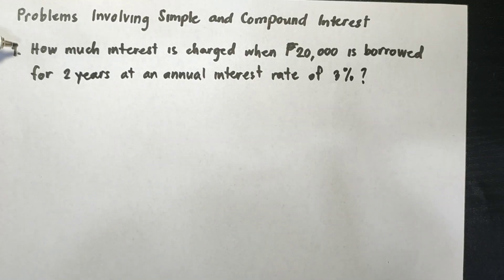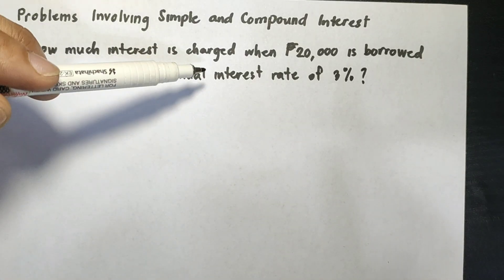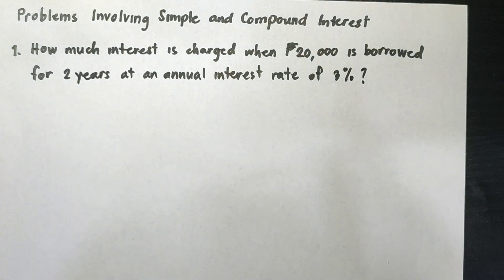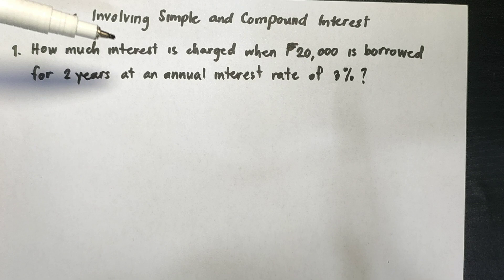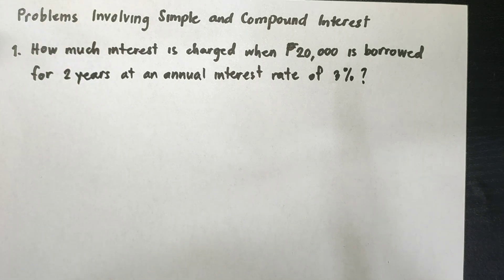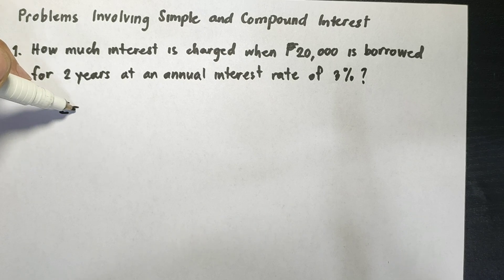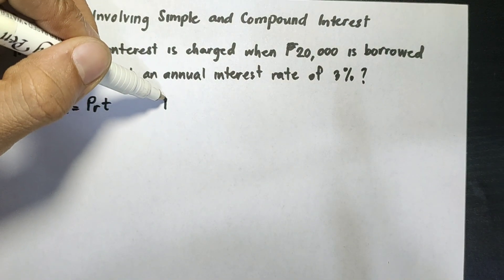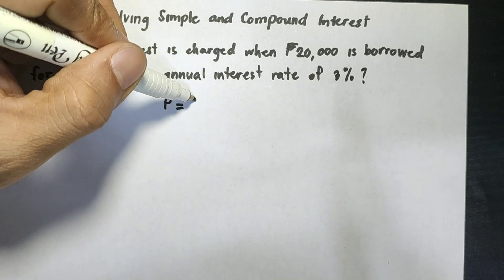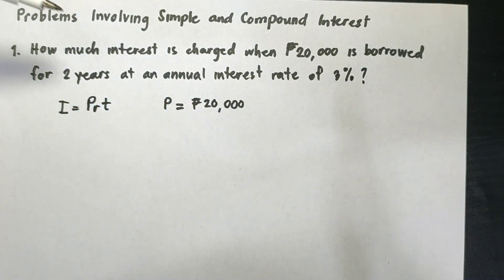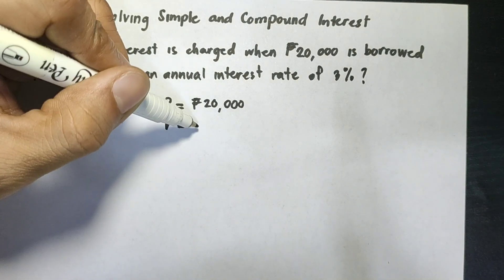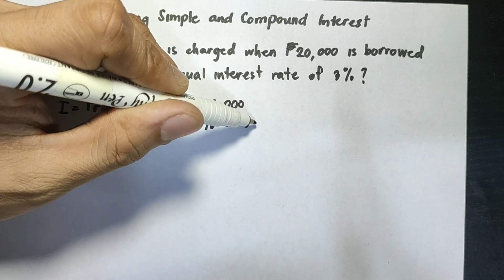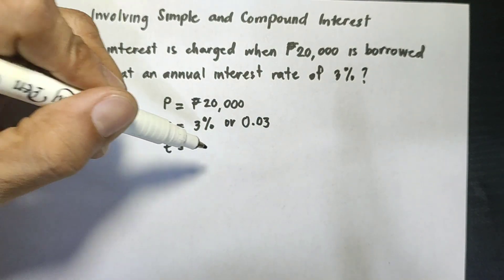Example number one: how much interest is charged when 20,000 pesos is borrowed for two years at an annual interest rate of 3%? Since it is not indicated that it is compounded interest, we will use the simple interest formula where I equals P times R times T. The principal amount is 20,000 pesos, the annual interest rate is 3% or 0.03 in decimal, and the time is 2 years.